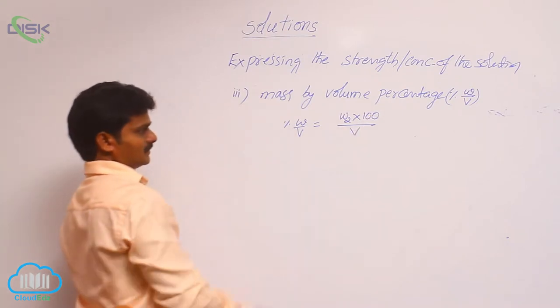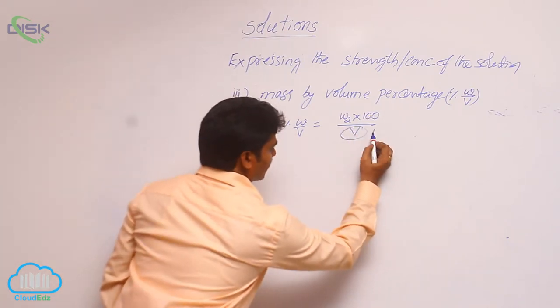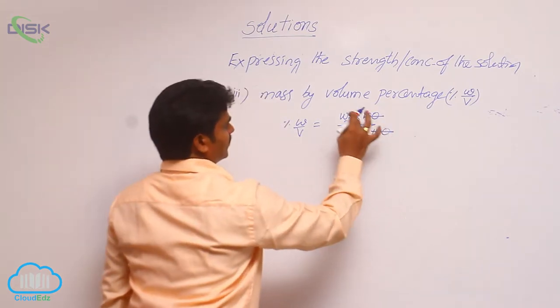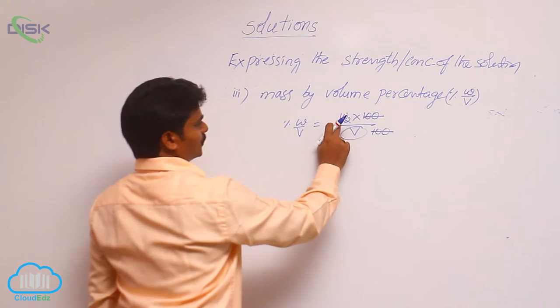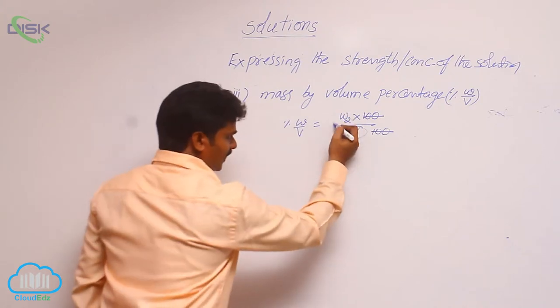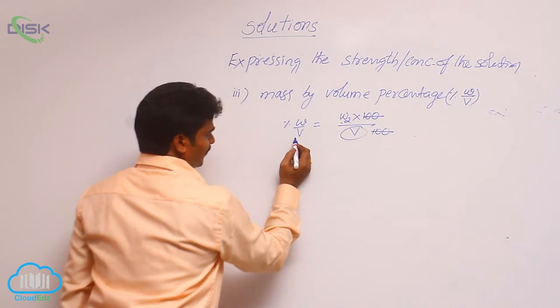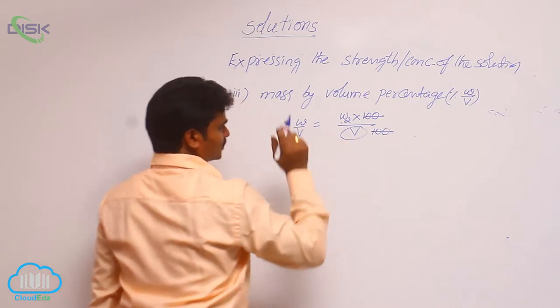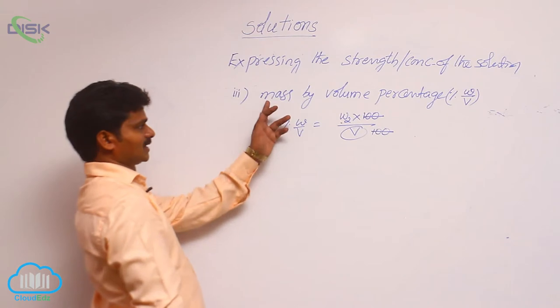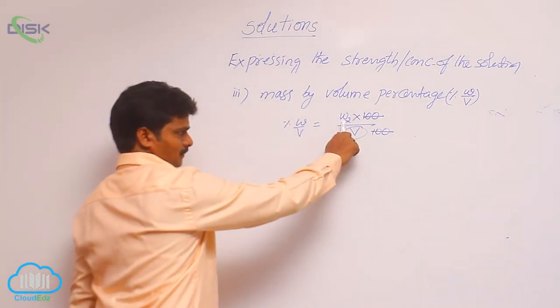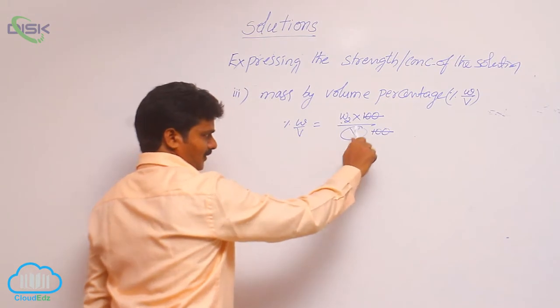So how to define it? If V is taken as 100, then 100, 100 cancelled out, leaving W2. That means weight of solute is nothing but mass by volume in 100 ml solution. So mass by volume percentage means it is the weight of solute present in 100 ml of solution.